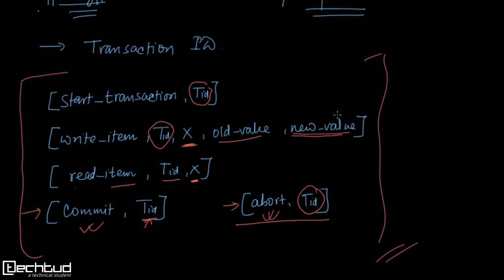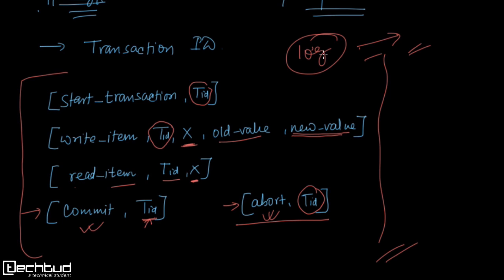Transaction failures are inevitable in database management systems, so we should have a well-defined recovery mechanism. One of the key tools we use is log files. These log files are stored on disk, which is why if a crash or problem occurs with the disk, recovery becomes hard. Hope you understand this — thanks for watching.